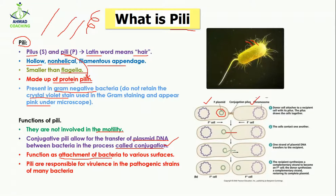Pili also function in the attachment of bacteria to various surfaces — so instead of flagella, bacteria use pili to attach to a particular surface. Pili are also responsible for virulence in the pathogenic strains of many bacteria. Virulence means that they are going to cause disease, so in pathogenic bacteria, the pili are responsible for virulence. This was all about what is pili.